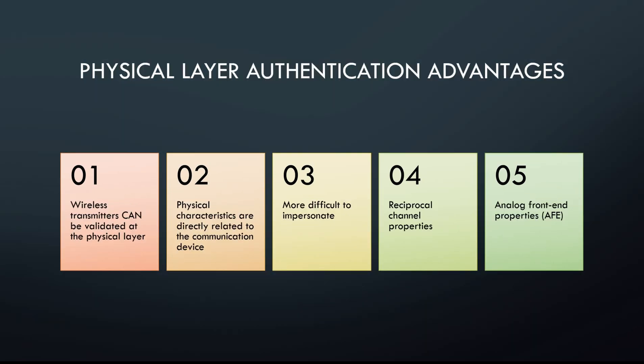This paper wanted to focus on some of the physical layer authentication advantages. Wireless transmitters can be validated at the physical layer. The physical characteristics are directly related to the communication device, and this is a good thing because it makes it much more difficult to impersonate these characteristics. They also contain reciprocal channel properties and analog front end properties, which is a concept we're going to explain later in the presentation.